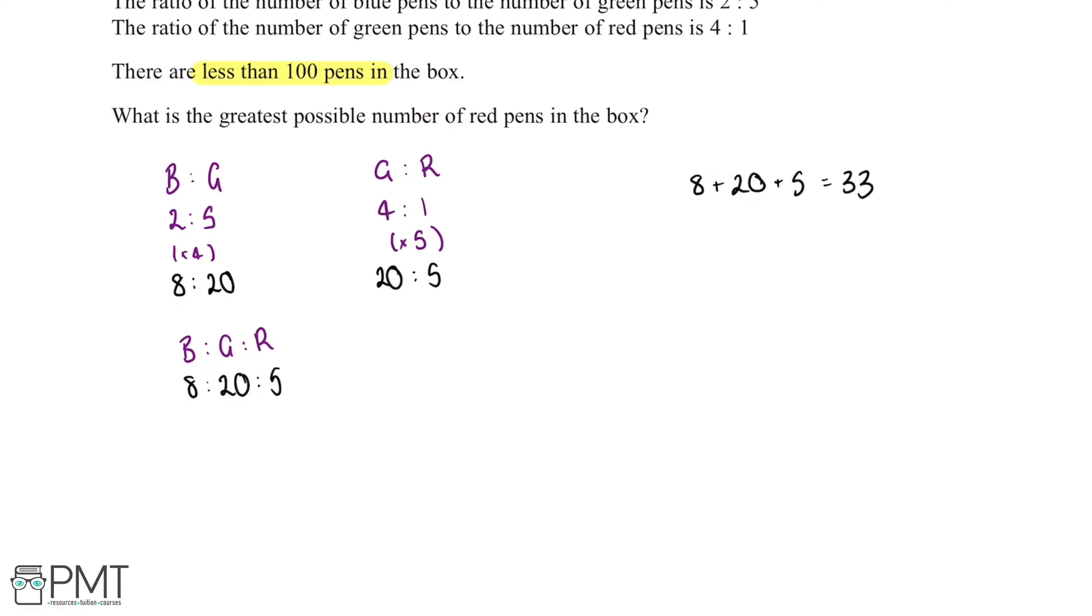So we want to work out how many lots of 33 we can fit into 100. So 3 multiplied by 33 gives us 99, and if we added another 33 pens this would then be over 100.